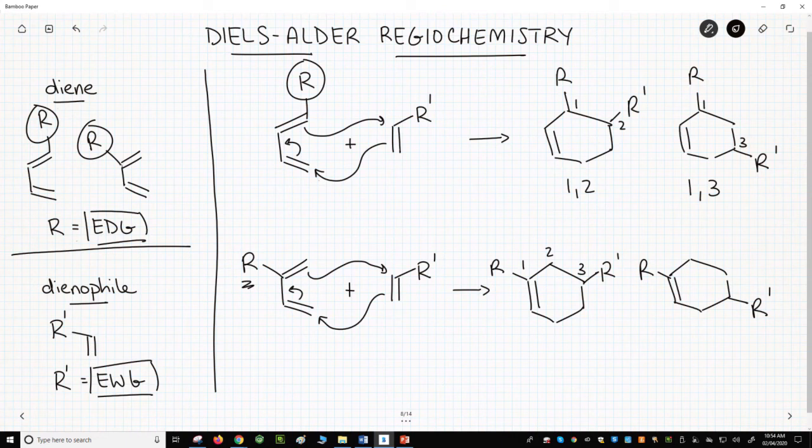On the bottom line, the first one would be an example of a 1-3 product. And the second regioisomer would be a 1-4 product. By the way, do not call these ortho, meta, or para isomers because these are not benzene rings.